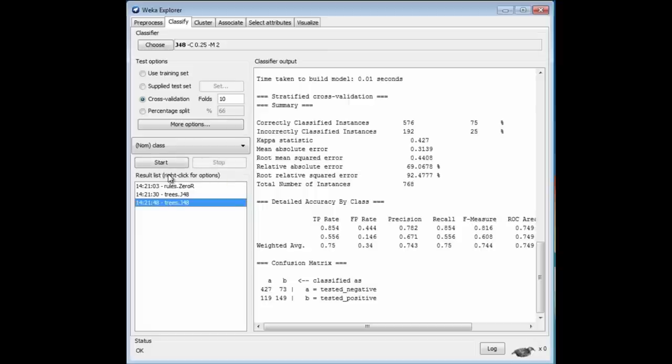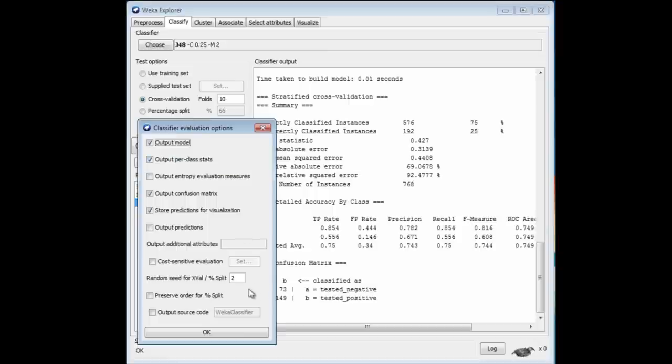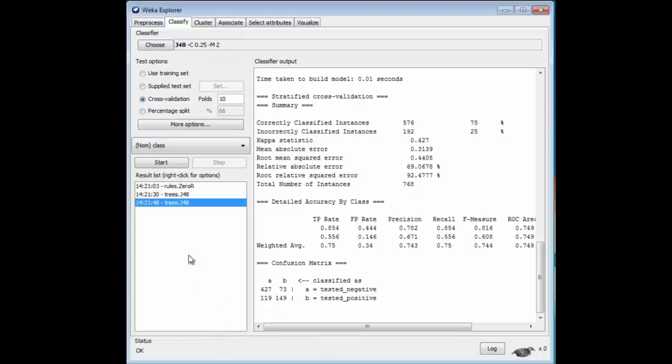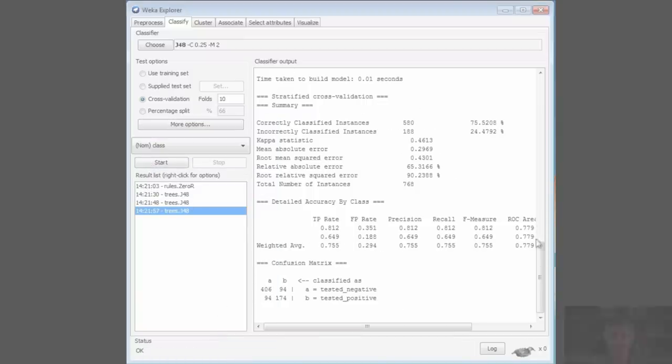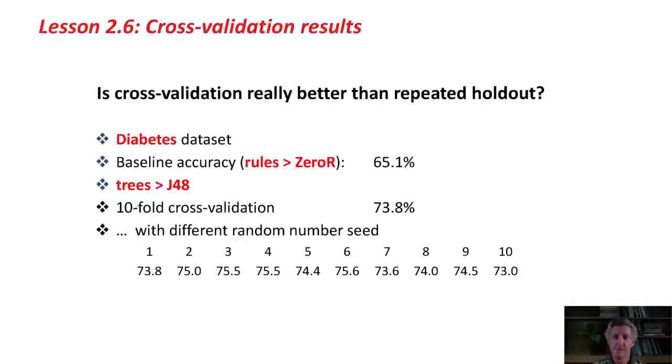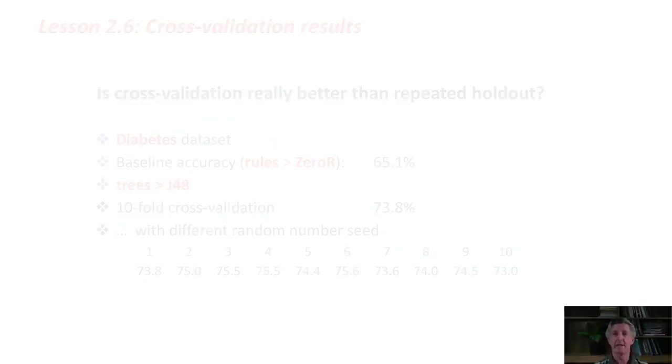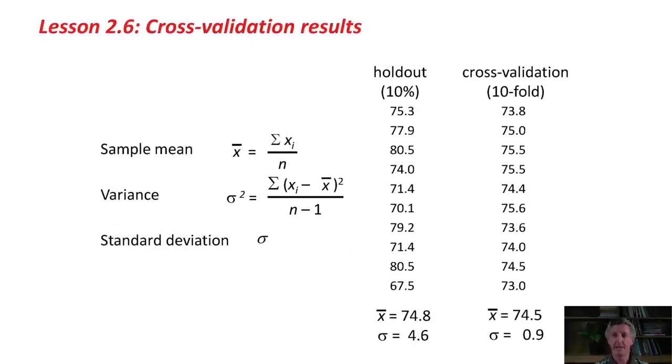I get 75%. Do it again. Change it to 3. I can choose anything I want, of course. Run it again. I get 75.5%. These are the numbers I get on this slide with 10 different random number seeds. Those are the same numbers on this slide in the right-hand column. The 10 values I got, 73.8, 75, 75.5, and so on.